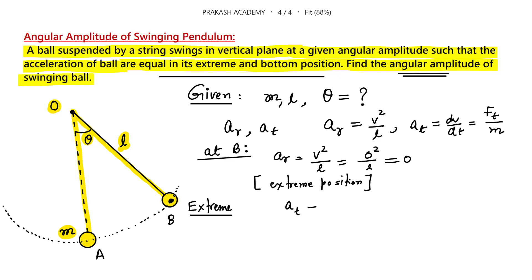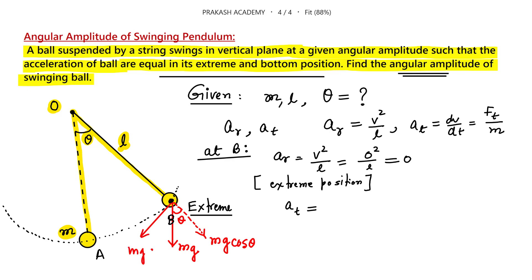What is the tangential acceleration at point B? The force acting on the ball is a component of Mg. Since Mg acts downward and the angle is theta, the component along the tangential direction is Mg·sinθ. The other component along the string is Mg·cosθ. So tangential acceleration = Mg·sinθ / M = g·sinθ.